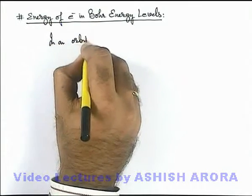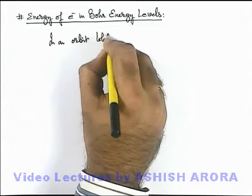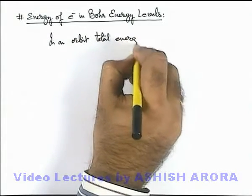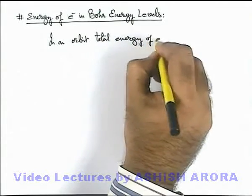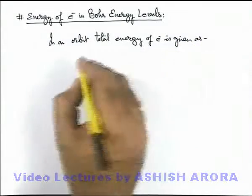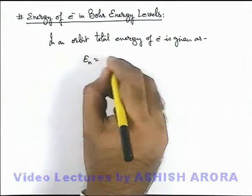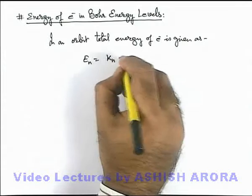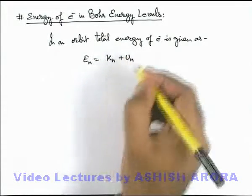In an orbit, total energy of electron is given as: This can be written as total energy is equal to the sum of kinetic energy in nth orbit plus potential energy in nth orbit.